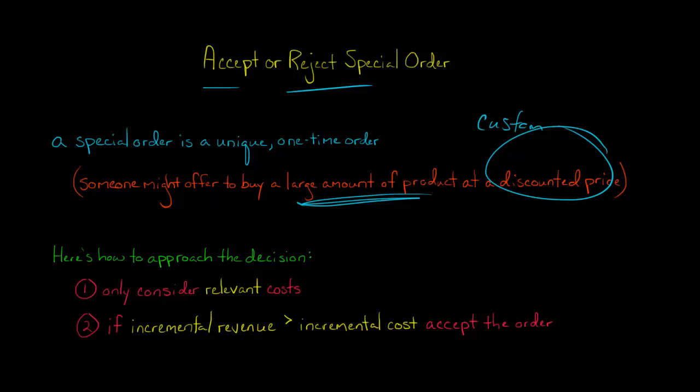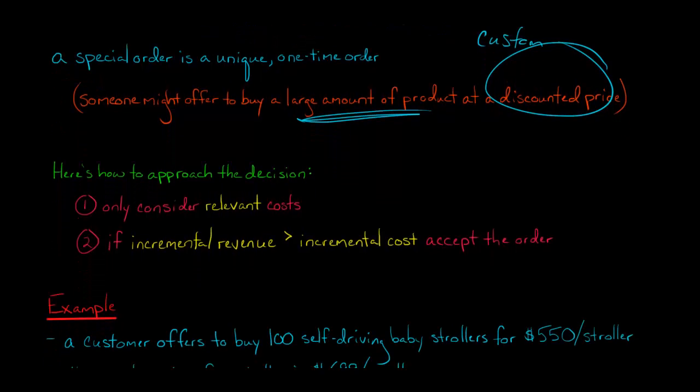When you're thinking about this decision of accepting or rejecting a special order, first of all, you only want to be thinking about relevant costs. And I'm going to give you an example of some relevant and irrelevant costs in the example we're going to do in a minute. But second, you want to look at the incremental revenue that you are getting and compare that to the incremental cost. And if the incremental revenue is higher than the incremental cost, you would accept the order.